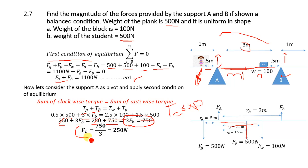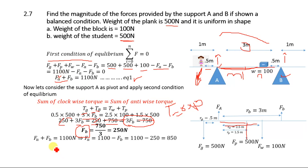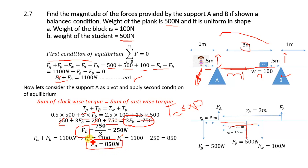So Fb, the force provided by support B, is equal to 250 N. Now substituting this into equation number 1: Fa + Fb = 1100 N, so Fa = 1100 − 250 = 850 N. The force provided by support A is 850 N, and the force provided by support B is 250 N. This is our answer.